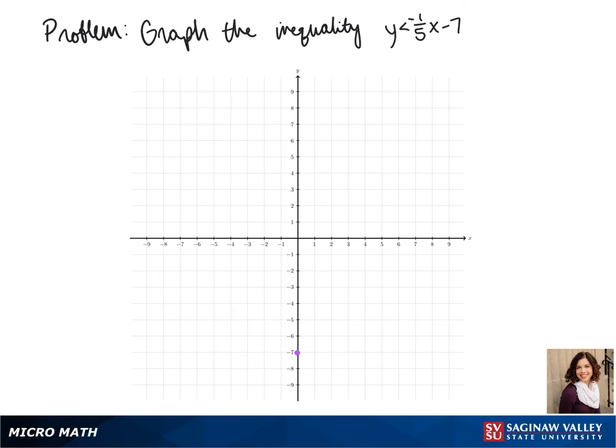To graph our line, first we graph our y-intercept, which is negative 7. Then we use our slope to find more points, so we go up 1 and over 5.